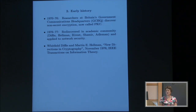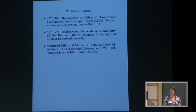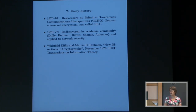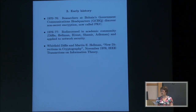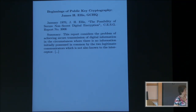Some early history: from 1970 to 1976, researchers at Britain's equivalent of NSA, GCHQ, discovered non-secret encryption, which is now known as public key cryptography. It was rediscovered in 1976 to 1977 in the academic community by Diffie and Hellman, who also applied it to network security. Here is Ellis's paper — his abstract — and I actually got permission from GCHQ to put this slide up.